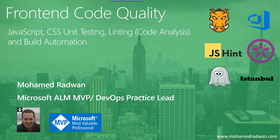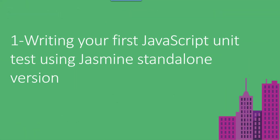Let's see the first video. I'm going to talk about how to write your first unit test using Jasmine and run it using the standalone version. We will understand what the standalone version in Jasmine is, how to download it, and how to write your unit test. You don't need anything — you can just run it with the standalone version.